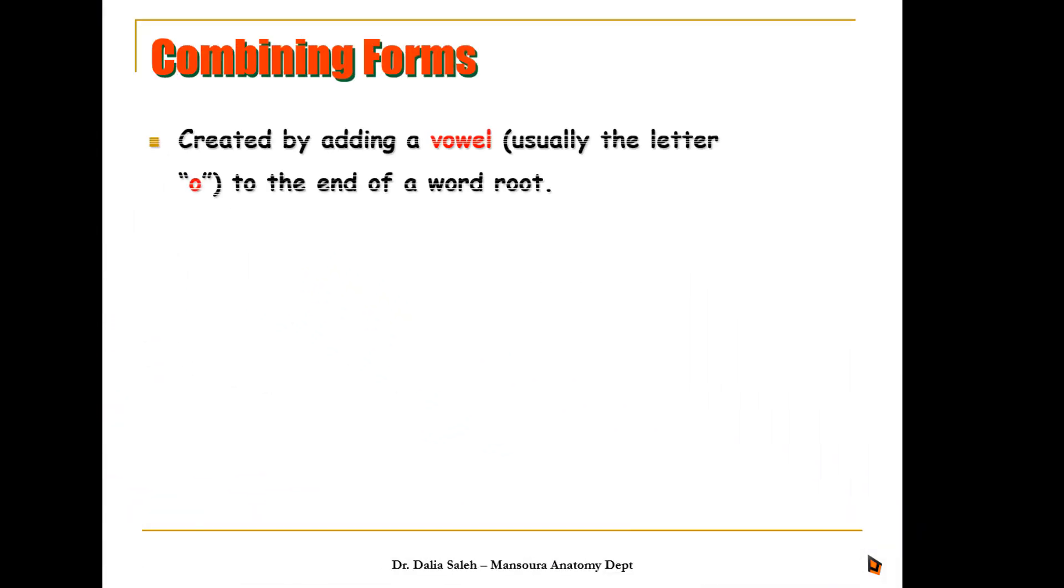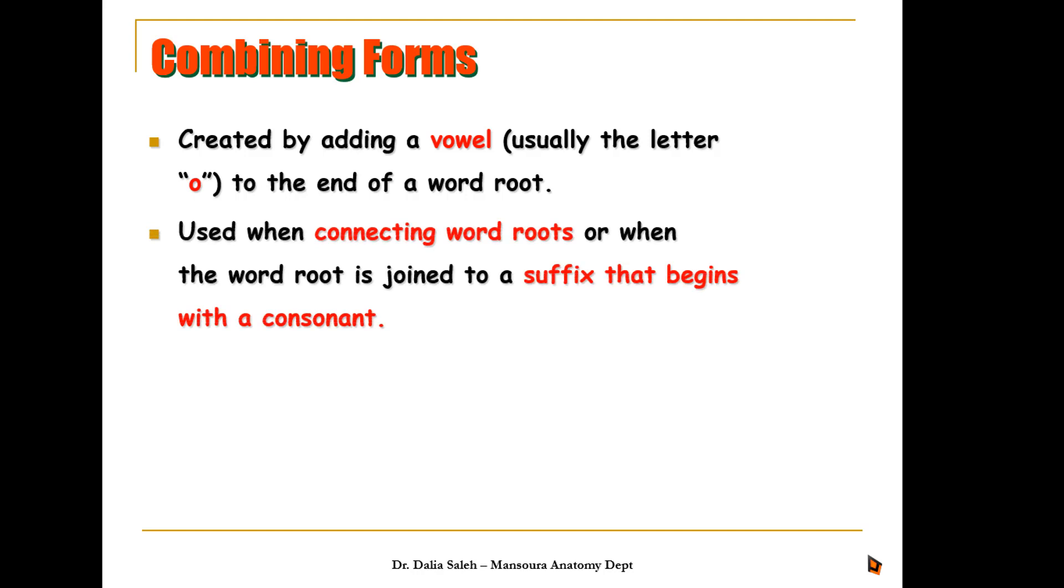The combining forms are created by adding a vowel, usually the letter O, to the end of a word root. It is used when connecting word roots together or when you connect a word root with a suffix that begins with a consonant.